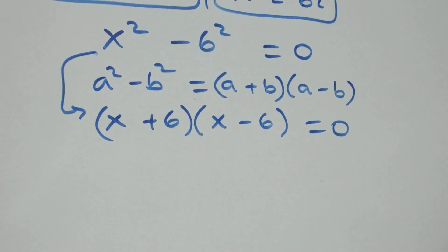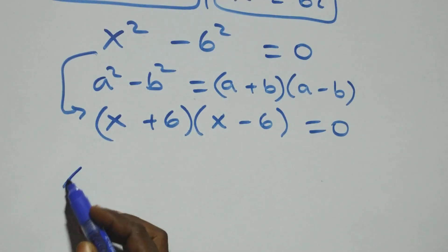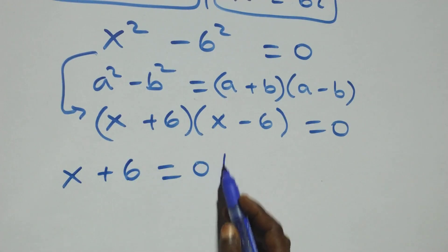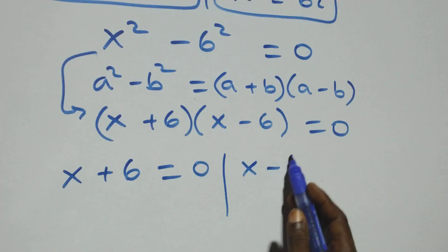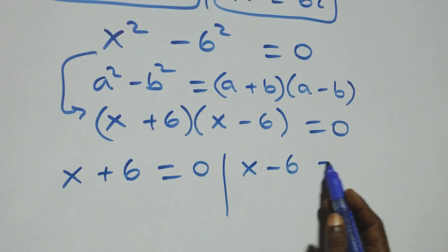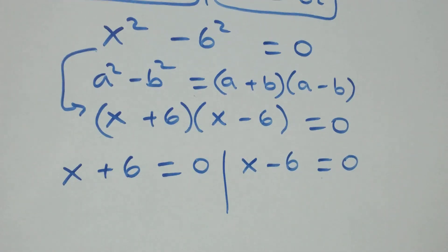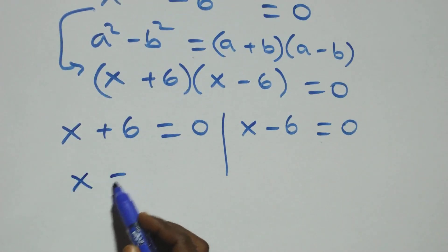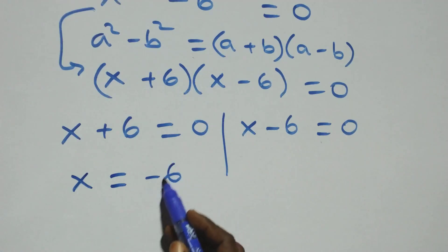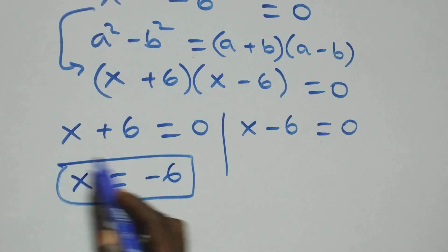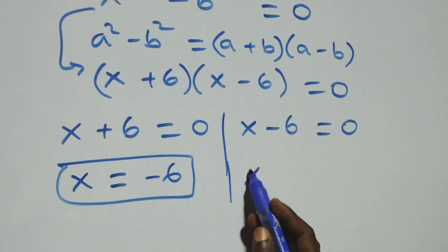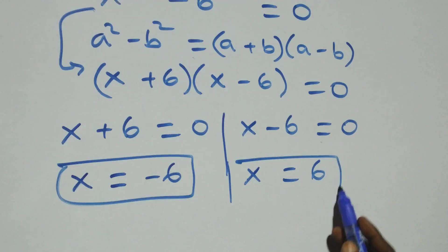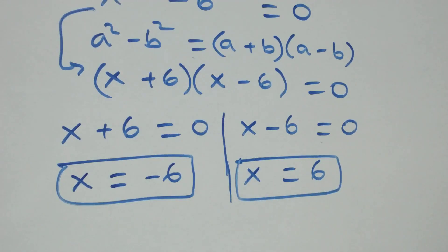Then we also have two possible cases: x + 6 equals 0, or x − 6 equals 0. This gives us x equals −6, which is a real solution, and x equals 6, which is also a real solution.